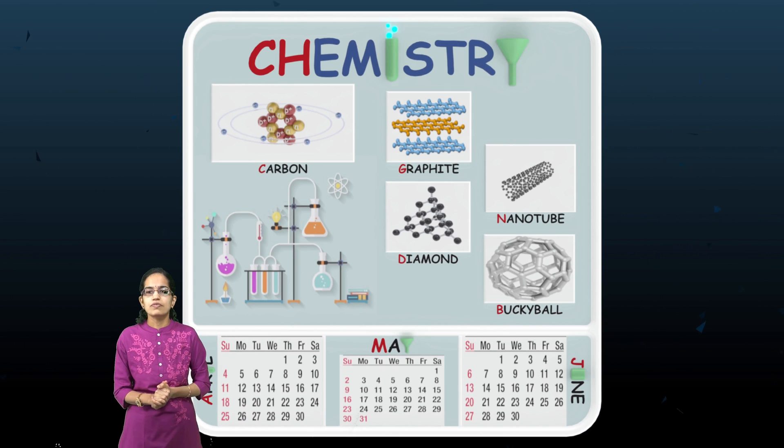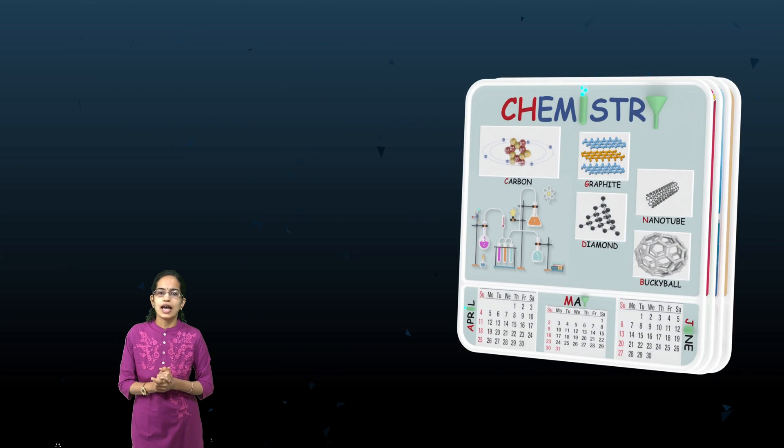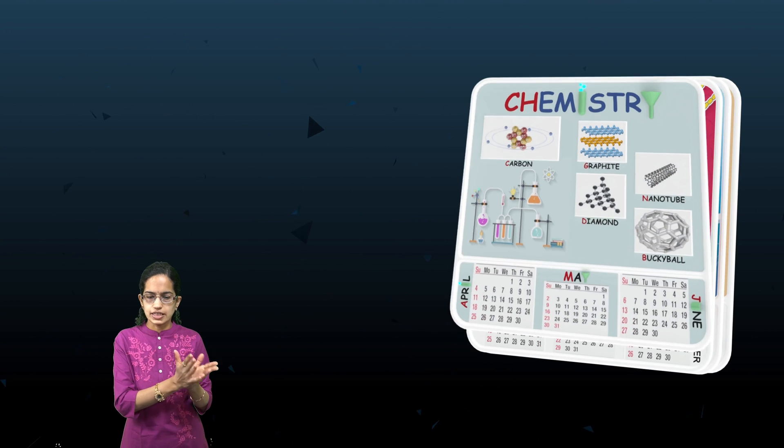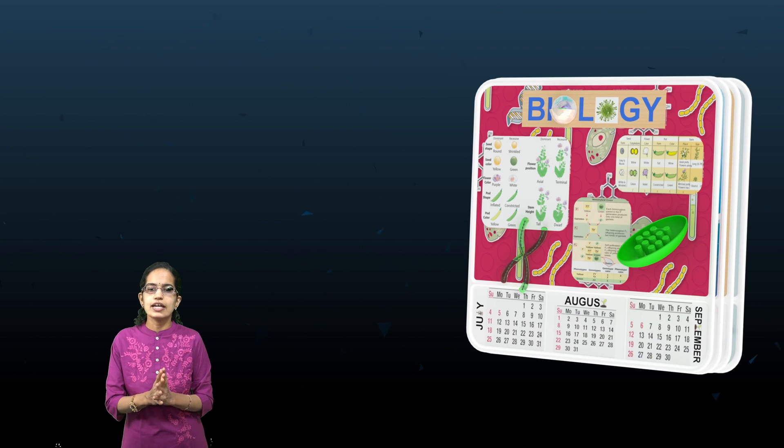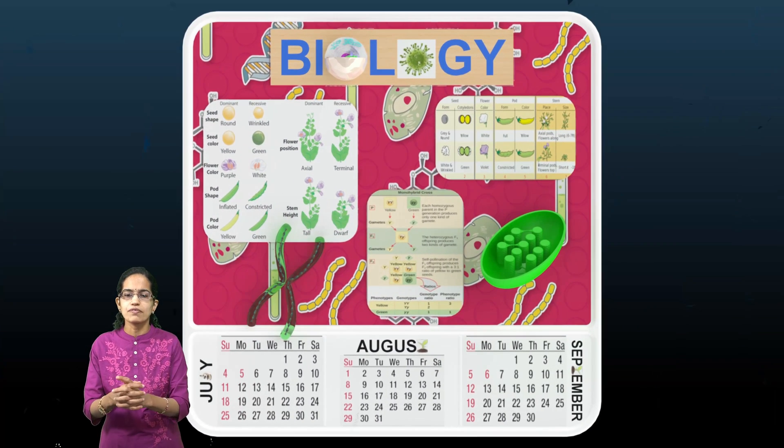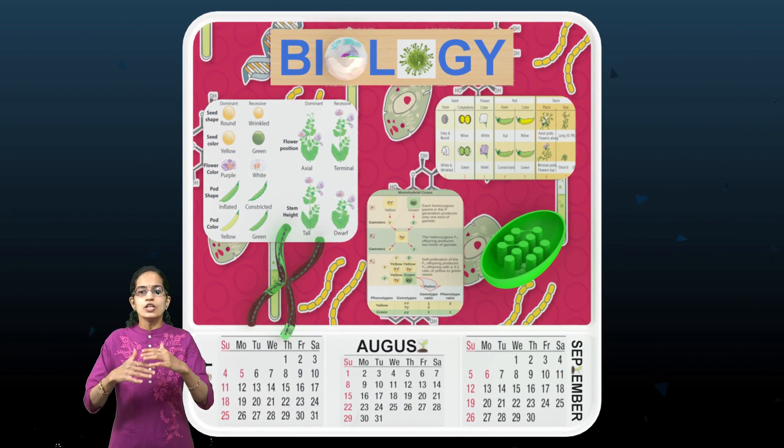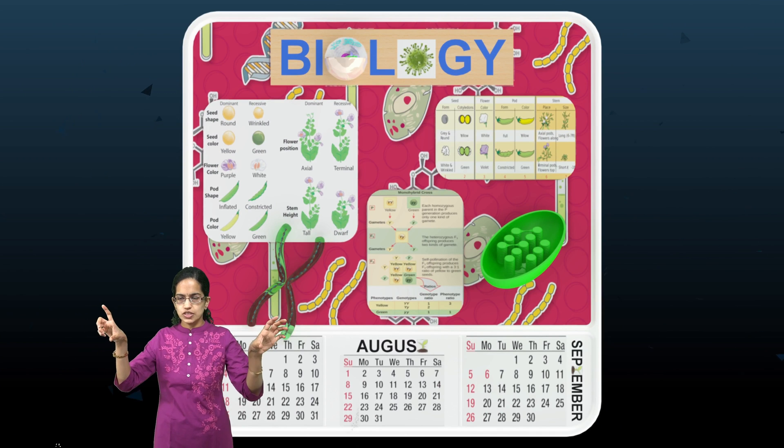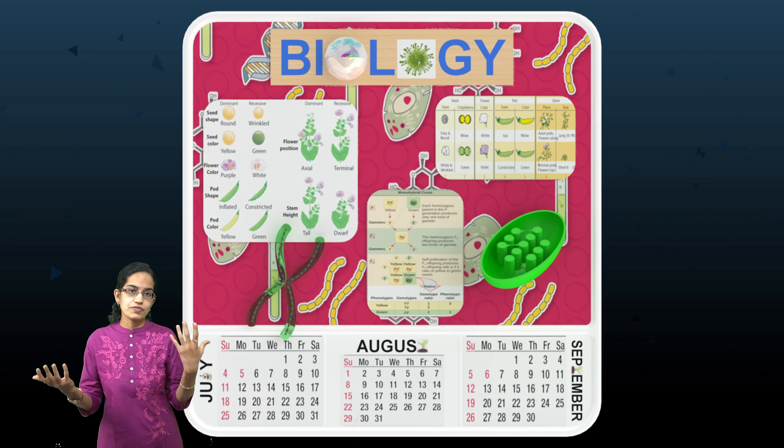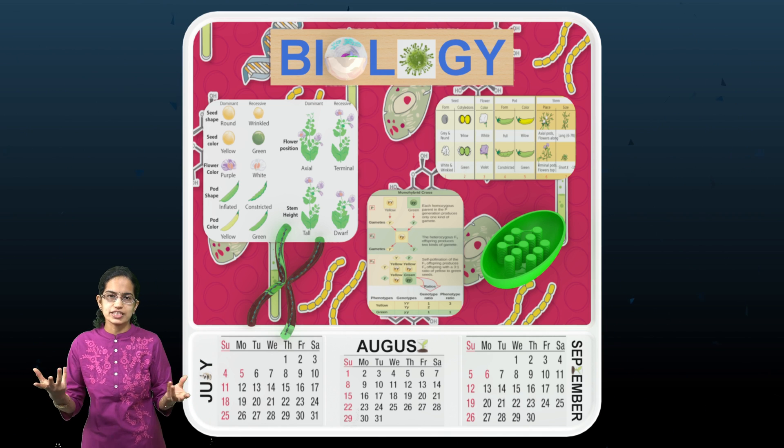Next, moving forward to the next section, which is biology. In biology, we have the next three months. Here we're talking about genetics, Mendel's law of inheritance, or the structure of cells. In the word biology itself, we can draw a diagram of a cell or a COVID virus, for example.